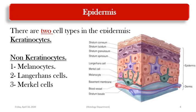Keratinocytes are arranged in multiple layers. The first layer resting on the basement membrane is called the stratum basale. The second layer is the polygonal layer called stratum spinosum. Then cells start to be flattened and contain granules — this is the stratum granulosum. Next is a translucent layer called stratum lucidum, and the fifth layer is the stratum corneum.